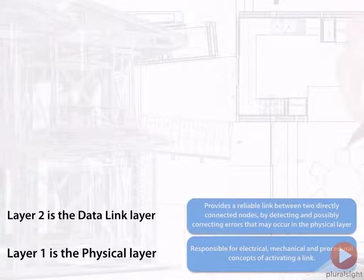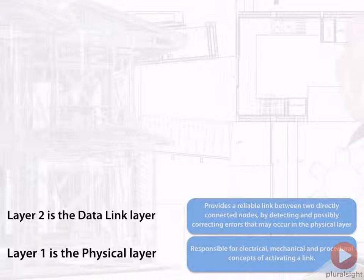Layer two is what we call the data link layer. The data link layer provides a reliable link between two nodes that are directly connected, and it detects and possibly corrects errors that could happen at the physical layer. So this layer transmits signal onto the physical medium. It is the bridge between the logical and the physical.